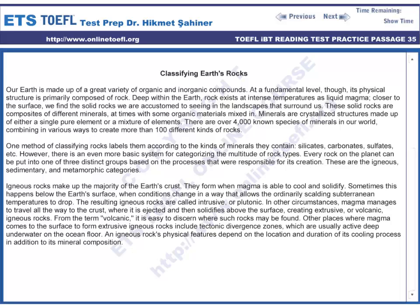Igneous rocks make up the majority of the Earth's crust. They form when magma is able to cool and solidify. Sometimes this happens below the Earth's surface when conditions change in a way that allows the ordinarily scalding subterranean temperatures to drop. The resulting igneous rocks are called intrusive or plutonic.